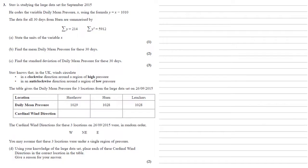Stav knows that in the UK, winds circulate in a clockwise direction around a region of high pressure and in an anticlockwise direction around a region of low pressure. The table gives the daily mean pressure for three locations from the large dataset on the 26th of September 2015. The cardinal wind directions for these three locations were, in random order, west, northeast, and east.